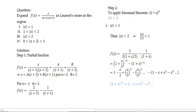Example: Expand f(z) = z/((z+1)(z+2)) in Laurent series for four regions: (1) |z| < 1, (2) 1 < |z| < 2, (3) |z| > 2, (4) 0 < |z+2| < 1. Step 1: Partial fractions. We write f(z) = A/(z+1) + B/(z+2), giving z = A(z+2) + B(z+1).